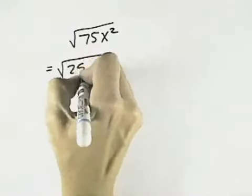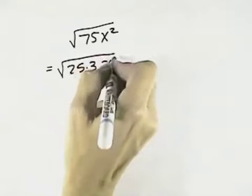Well, 75 I can break down into 25 times 3, and x squared already is a perfect square.